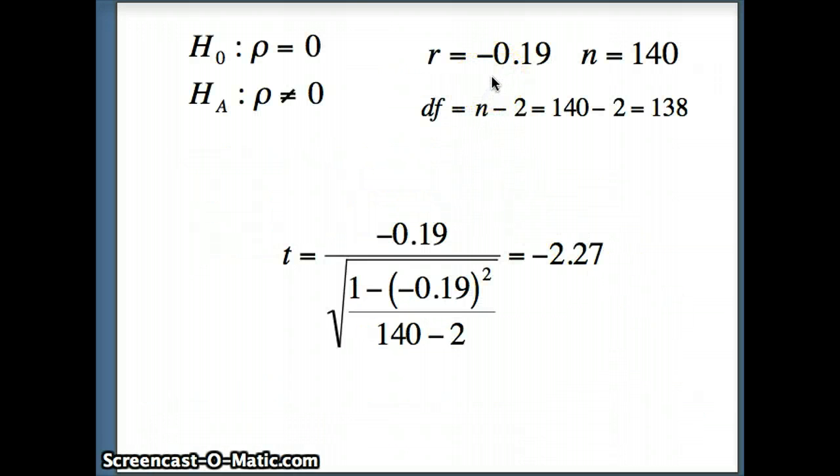The correlation that was obtained from this is negative 0.19 with N of 140. So with 140 individuals measured, the correlation was negative 0.19. So as the number of hours of study went up, the grades actually went down. But that is a very small correlation.